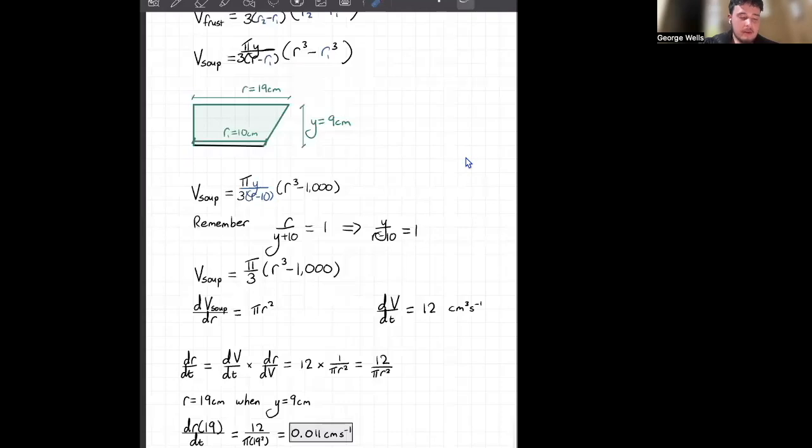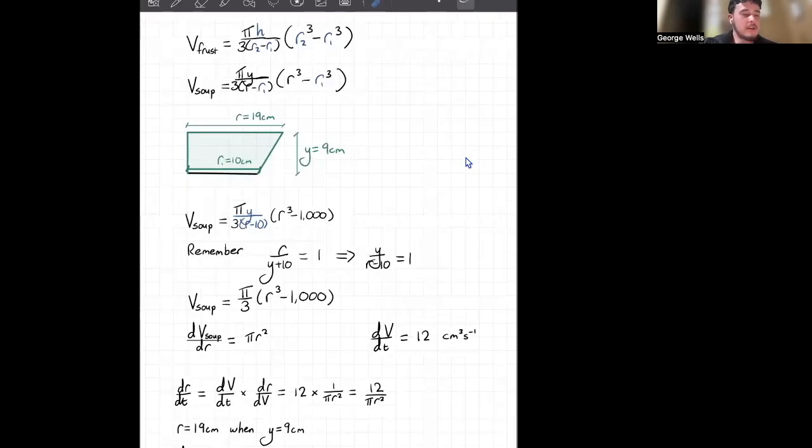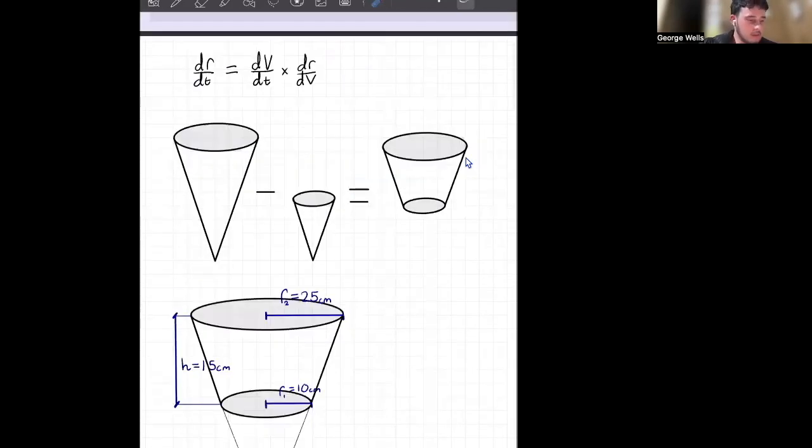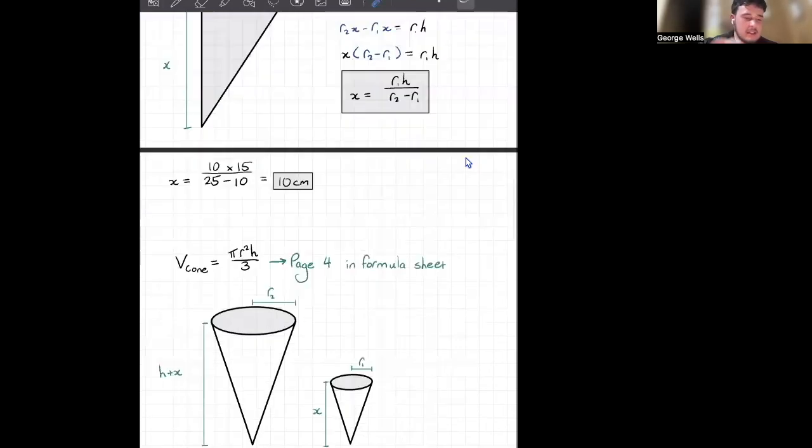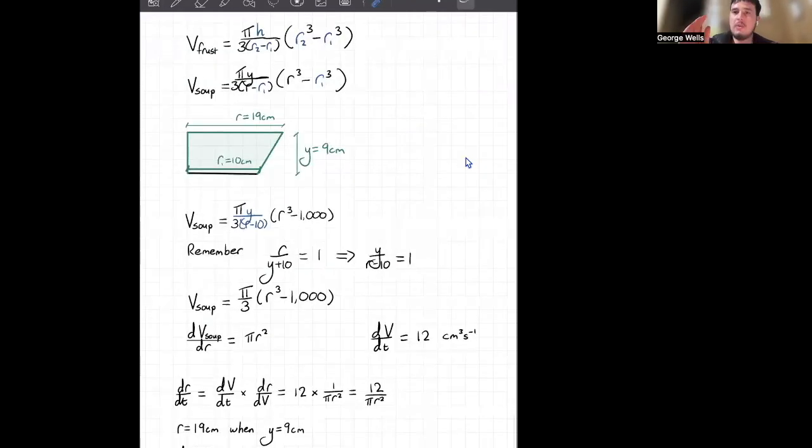Our dv dt, like we said at the start, is 12 centimeters cubed per second. Let's go back up. Yeah, we can see here it fills this bowl at a rate of 12 centimeters cubed per second. So dv dt. Nice, easy. It's given to us. Now we've finally got everything that we need to work out our dr over dt.